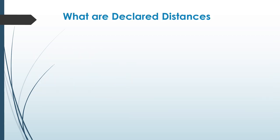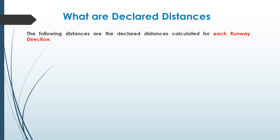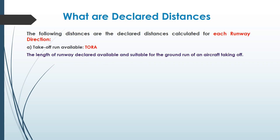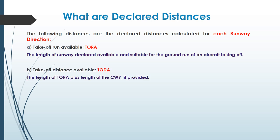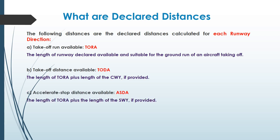Now it is time we understand the declared distances. The following are the declared distances that are calculated for each direction of the runway. First, the takeoff run available, or TORA — the length of the runway declared available and suitable for the ground run of an aircraft taking off. Second, the takeoff distance available, or TODA, which is the length of TORA plus the length of clearway if it is provided. Third, the accelerate stop distance available, or ASDA, which is the length of TORA plus the length of stopway if it is provided.